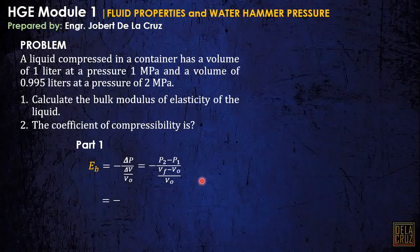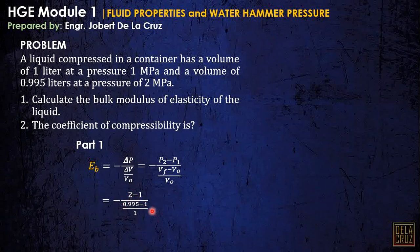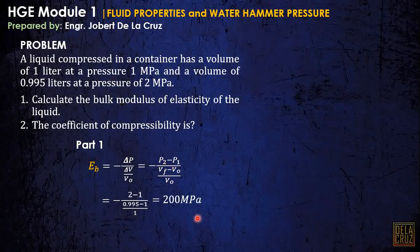This is just direct substitution, but what we need to watch out for here are the units. So, 2 minus 1 — take note that this whole term here, the volumetric strain, is unitless because the volumes cancel out. So the unit that will come out is the unit of pressure, which is megapascal. The result is 200 megapascal.